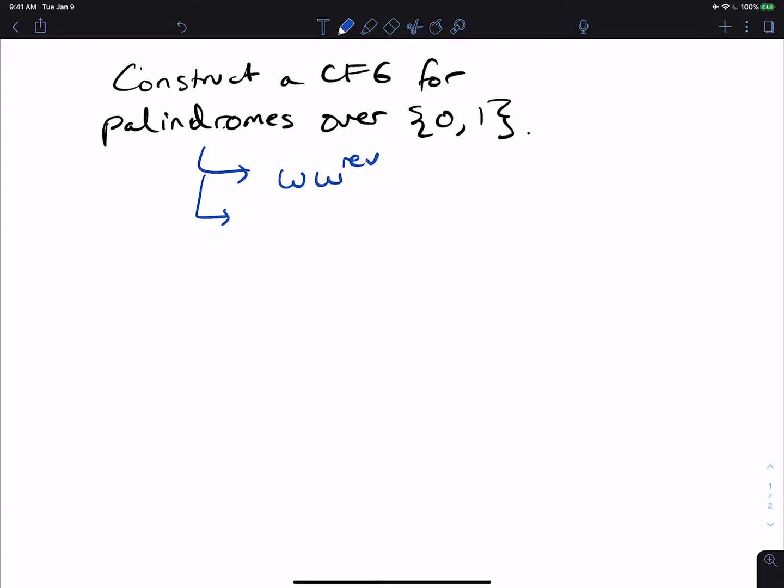Another way that we can think about this is that the string must start with some character like 0 and must end with 0 also, but also that the middle part is also a palindrome. And it doesn't matter whether it's a 0 or a 1 at the front, as long as the middle part is a palindrome.